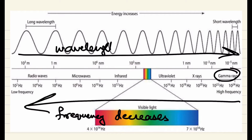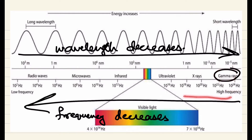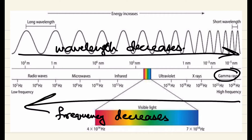Wavelength and frequency are opposite to each other. For the gamma rays, the frequency is in terms of 10 to the power of 24 hertz. As you move towards the left side: 10 to the power of 22, 20, 18, 16, 12, 10, 8, 6, 4, 2. So as you move from right to left, the frequency decreases. As you move from left to right, the wavelength decreases — and the opposite is true as well: from left to right frequency increases, and from right to left wavelength increases.